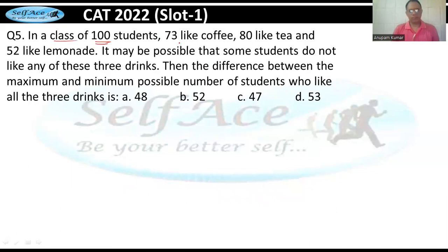In a class of 100 students, 73 like coffee, 80 like tea, and 52 like lemonade. It may be possible that some students do not like any of these drinks. Then find the difference between the maximum and minimum possible number of students who like all three drinks.